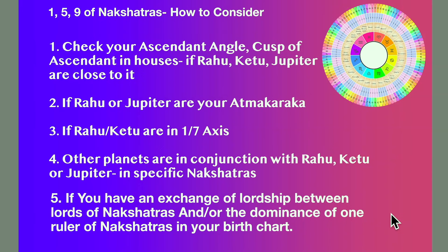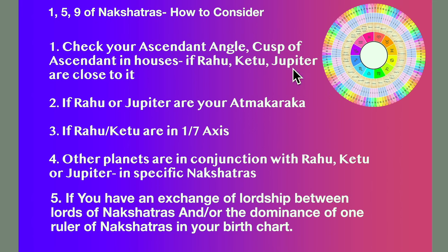The 159th aspect of nakshatras is important to consider, and we'll tell the rules of why it is so. Check your ascendant. Number 1: the ascendant angle — the cusp of your ascendant. Whatever planet is close to the ascendant, especially if it is Rahu, Ketu, or Jupiter close to that cusp, close to your ascendant angle — that's the first rule.